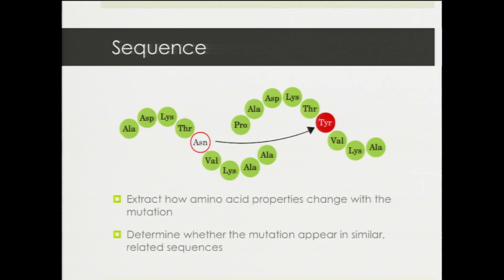Starting with the sequence: we have an antibody sequence where an amino acid ASN substitutes to TYR — that's the mutation. The first thing I extract is how amino acid properties change with the mutation — each amino acid has a certain charge and size, and large changes in those properties might destabilize the antibody so it binds worse. I also look at a database of millions of protein sequences to find those similar to my antibody, and check whether TYR appears at that particular location in related sequences — because if it does appear, the mutation is more likely to be favorable.